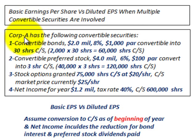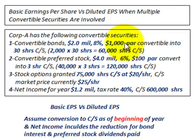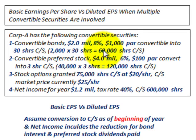For example, Corporation A has the following convertible securities. They have convertible bonds, $2 million worth, 8% interest, $1,000 PAR. They're converted into 30 shares of common stock per bond, so the total number of shares of common stock they convert into is 60,000 shares.